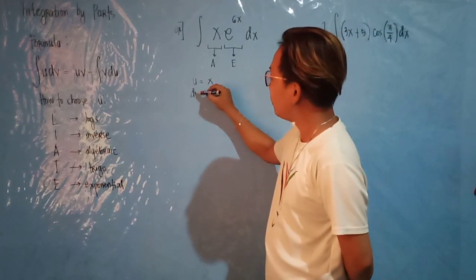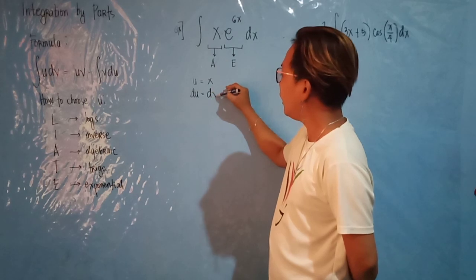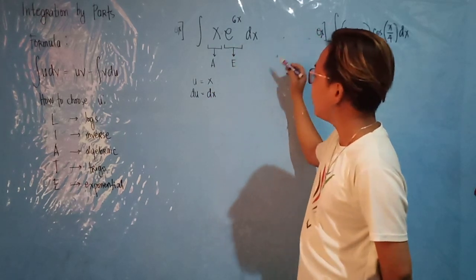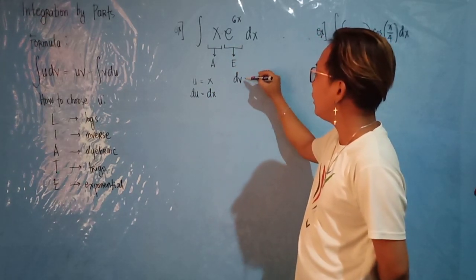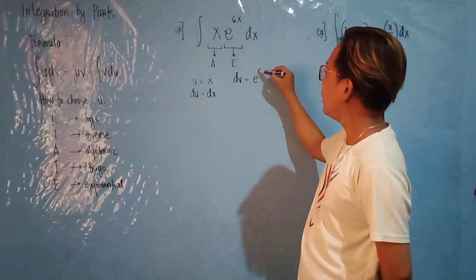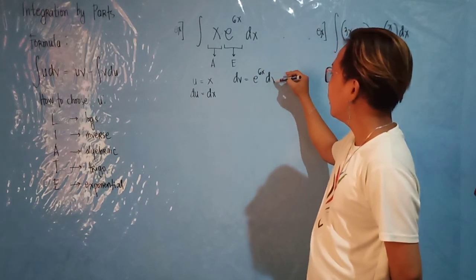Then get the derivative of your u, which is dx. Then get the rest of the equation as your dv, which is e raised to 6x dx.